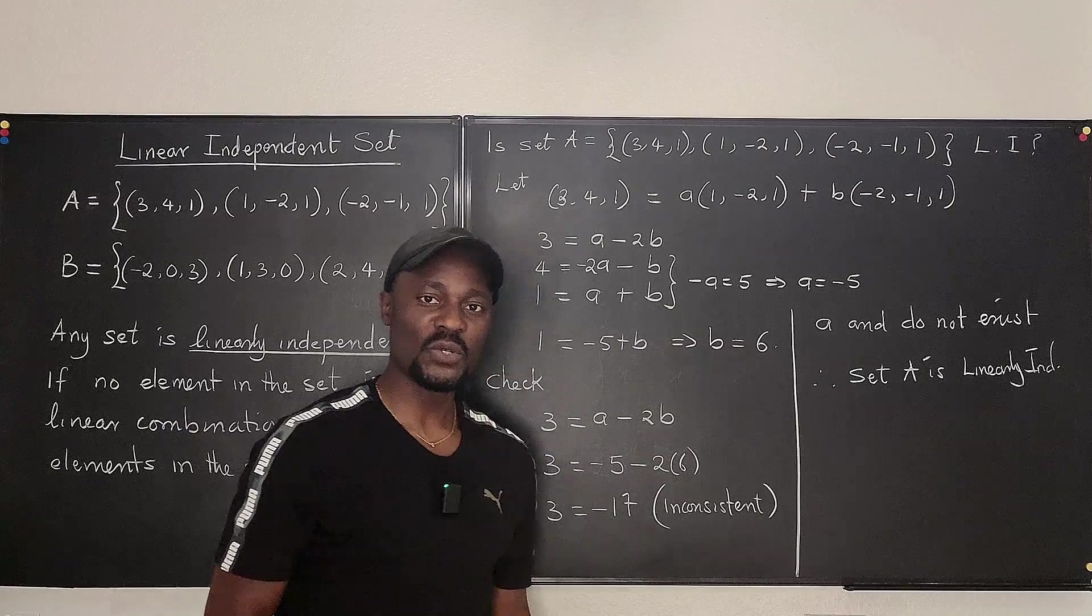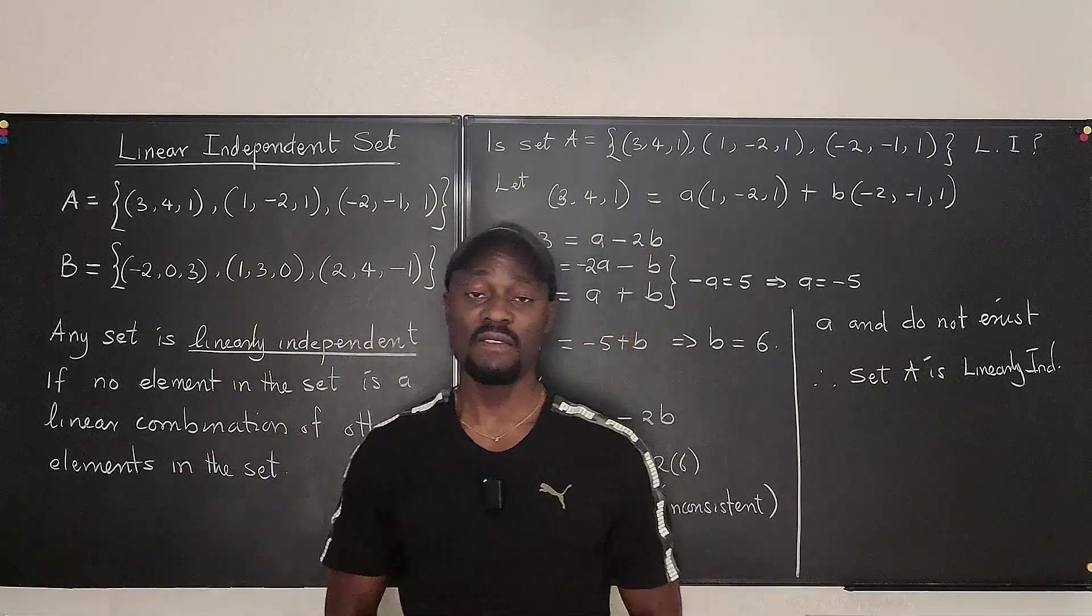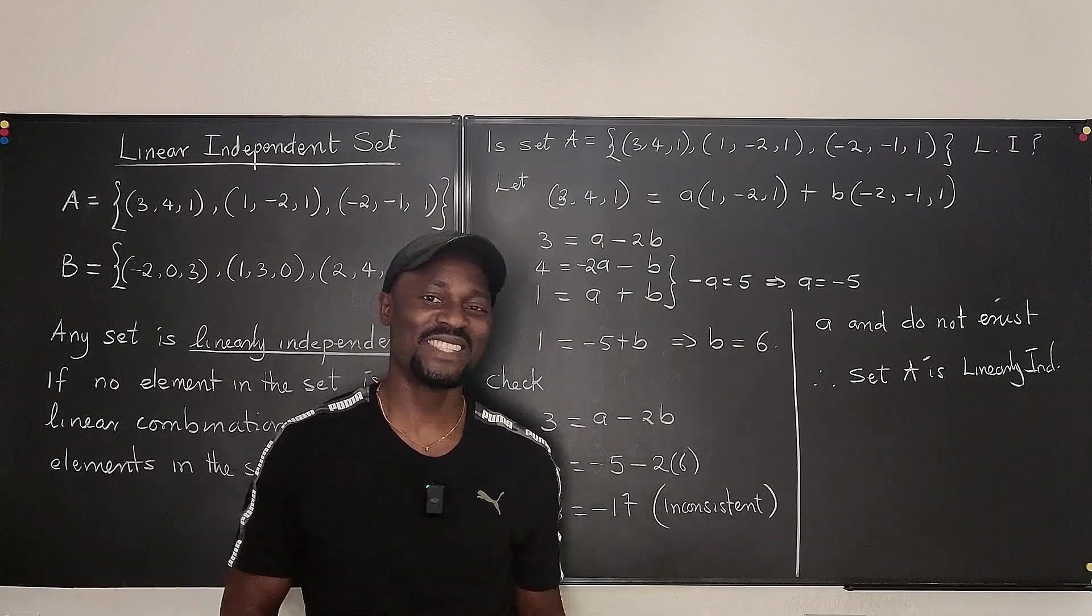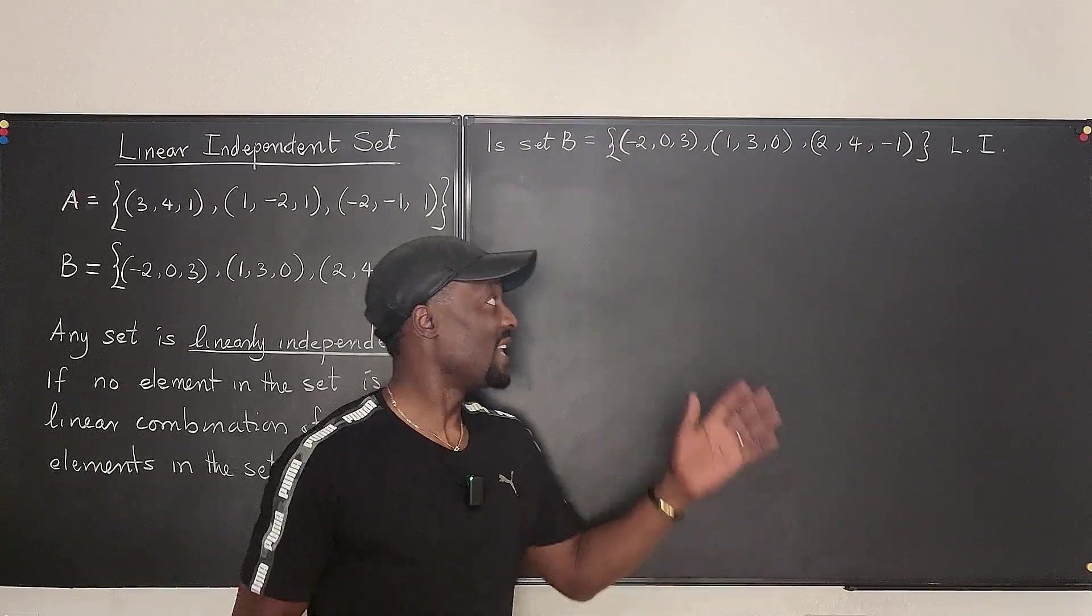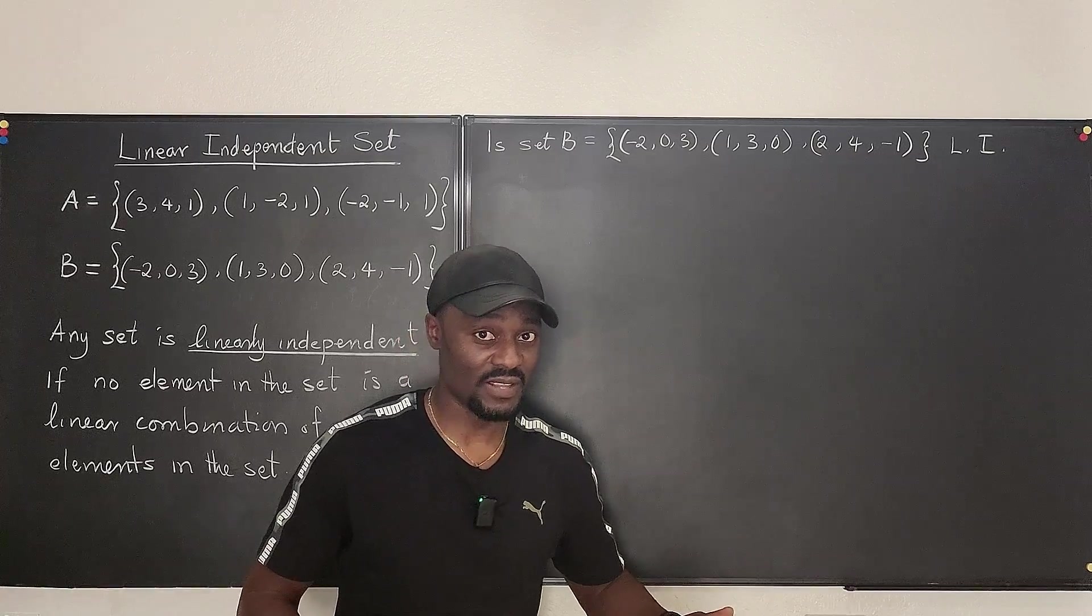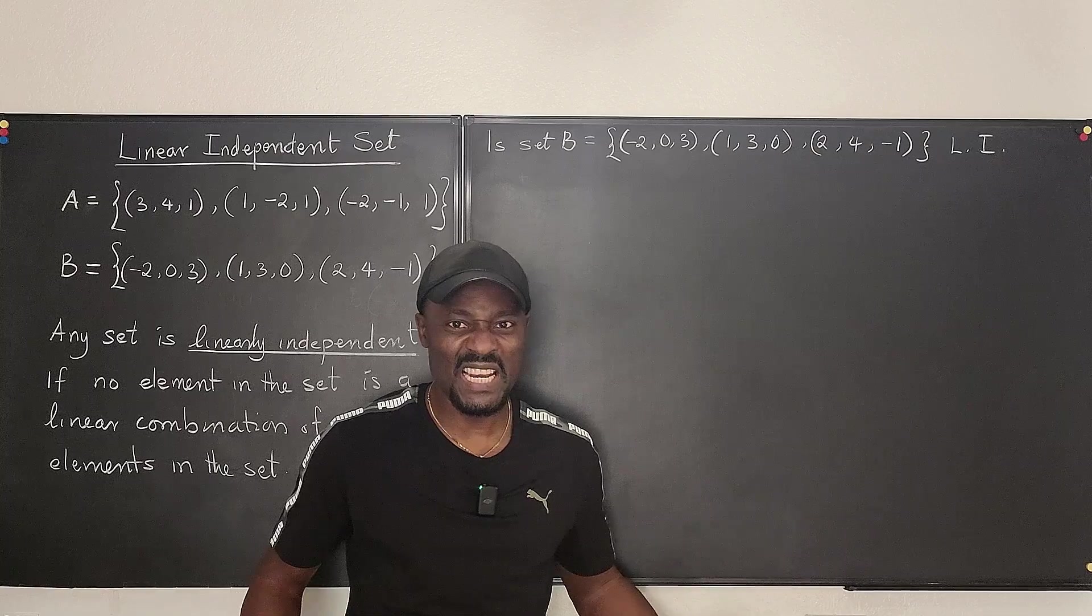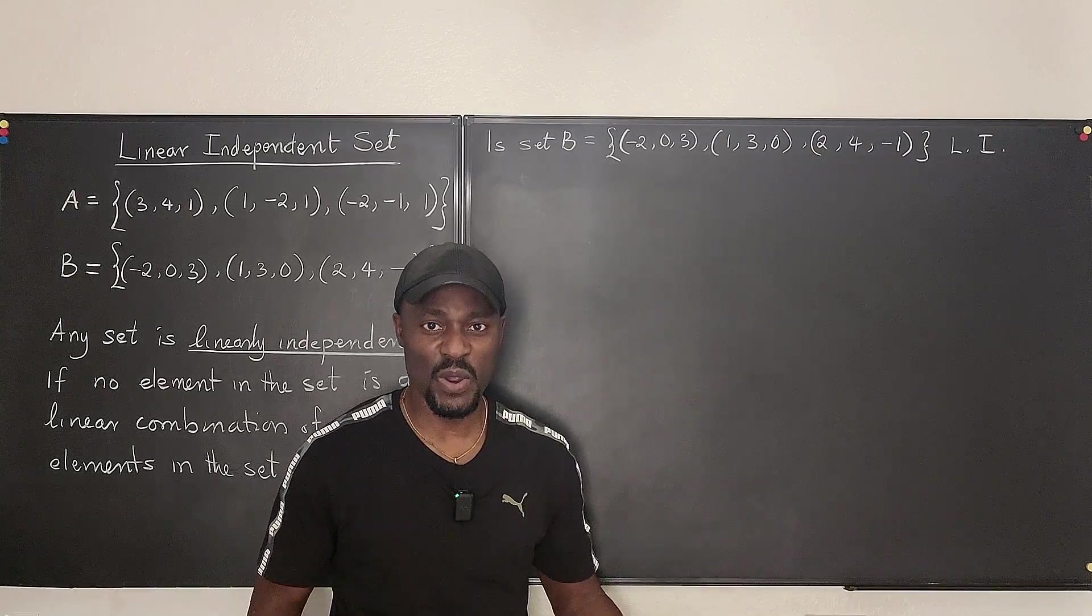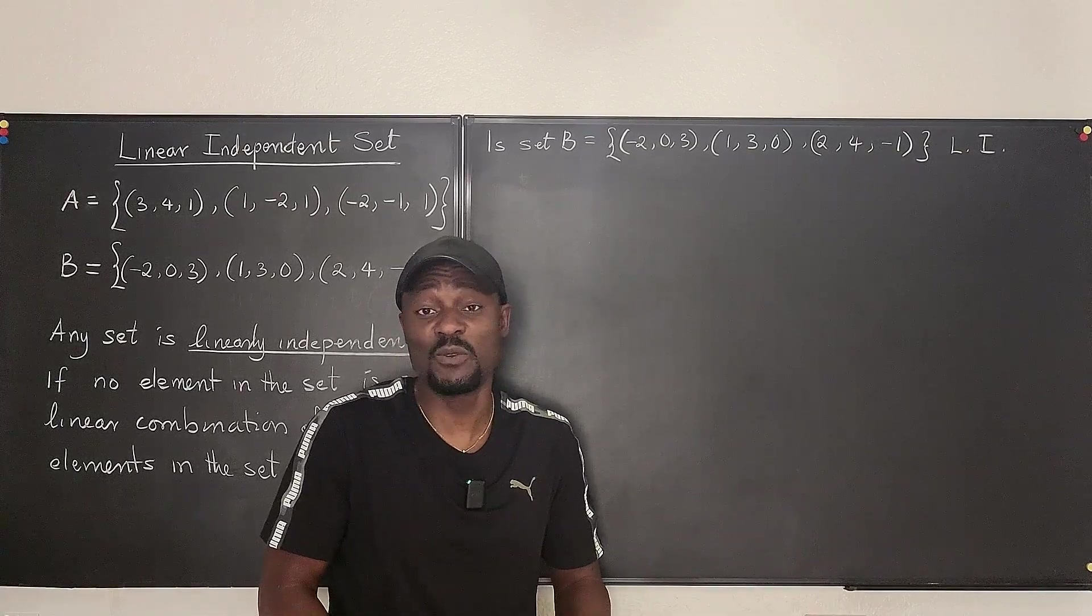I'm going to stop there. Too long a word. Now, let's check set B and see if it is linearly independent. I already told you that one of them is and the other is not. But let's see what we get. Before we continue testing B, remember that these sets that I have tested could be the columns of a matrix. I forgot to mention that. They could be the rows of a matrix. They could be the vectors in a vector space.